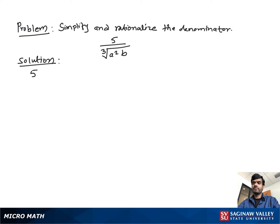Simplify and rationalize the denominator: 5 over cube root of a squared b. To make the denominator a rational number, we need to remove the radical sign, the cube root. So to make a perfect cube root at the denominator, we need